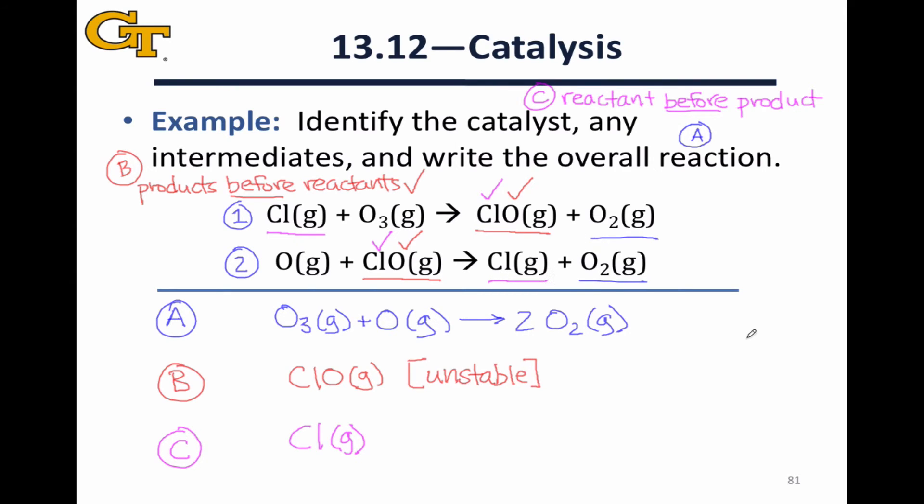One other thing I want to point out here about the catalyst is that it's generated at the end of the mechanism, which means that the same molecule that entered the mechanism in the first step exits the mechanism in the second step, and so that very same molecule, or atom in this case of chlorine, can actually serve as the catalyst again.